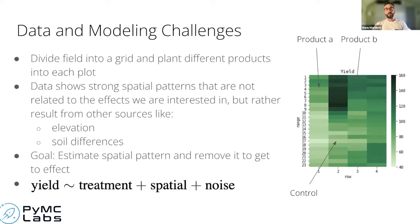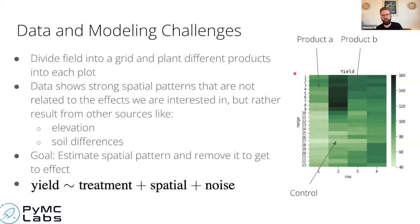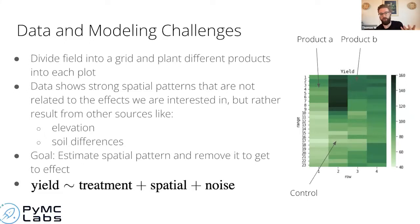The goal is to decompose the yield — what we're measuring — into the treatment effect we care about, the spatial component we want to regress out, and the remaining noise. We need to set up a model to get the best estimates from these raw values. One simple approach is a separate effect for every row and column, but that doesn't capture blob-like spatial patterns influencing multiple plots. Gaussian processes are a very nice tool for that, and this is the type of problem where we started using GPs and then with PyMC Labs took that model to the next level.